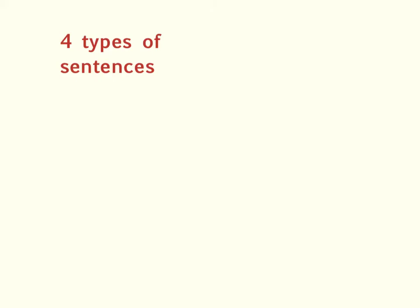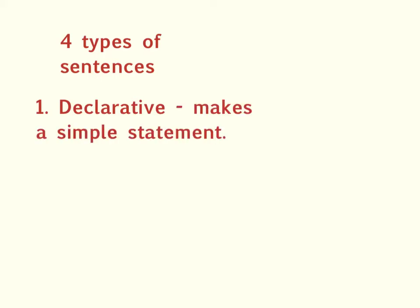Today is a review of the four types of sentences. The first type of sentence is a declarative sentence. Can you tell me what a declarative sentence does? If you answer that a declarative sentence makes a simple statement, then you're correct. Good job.